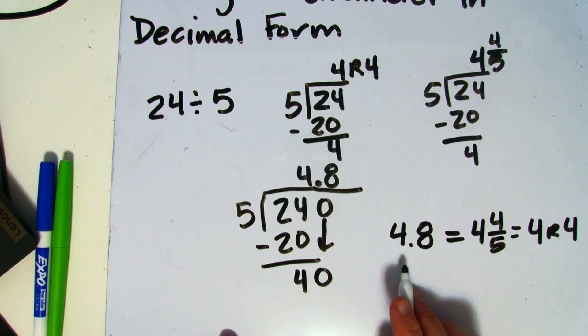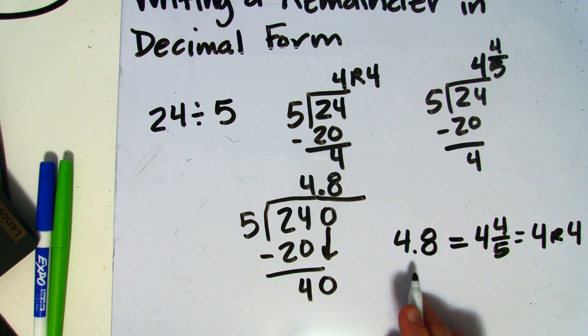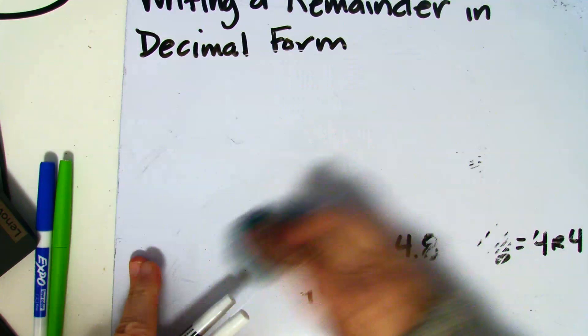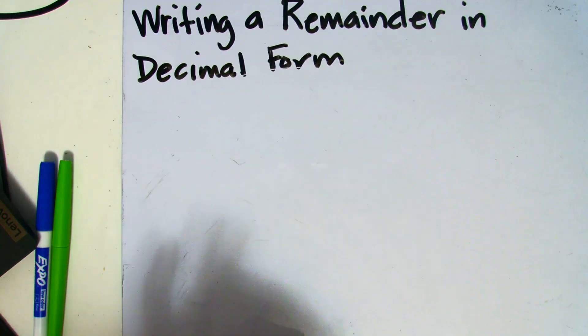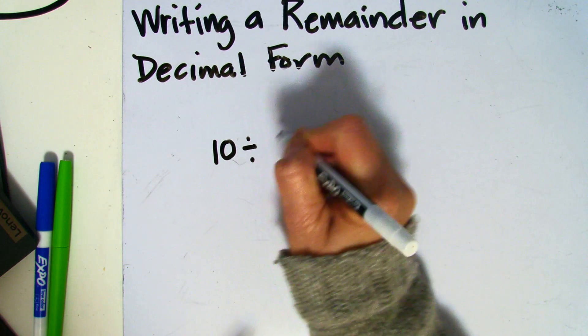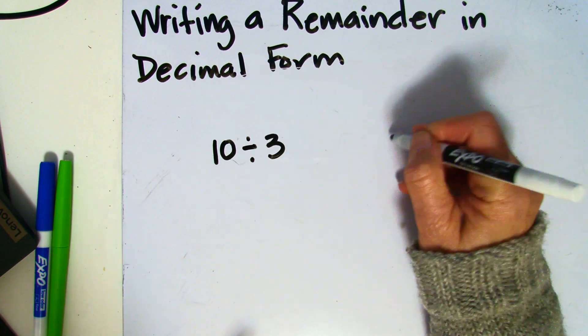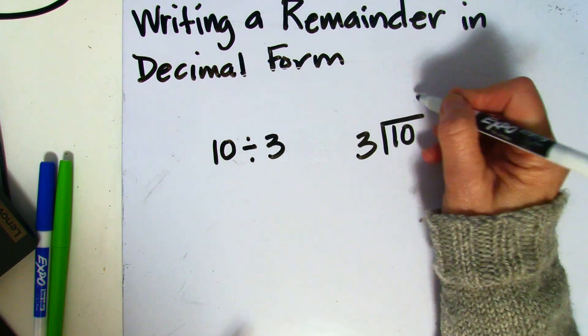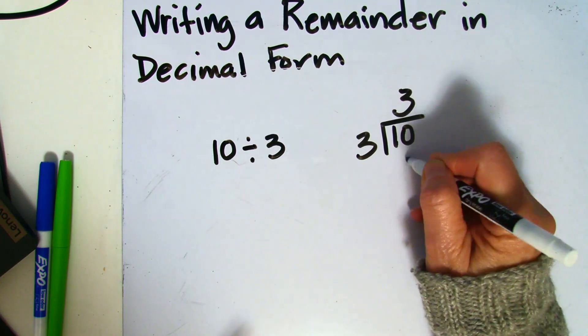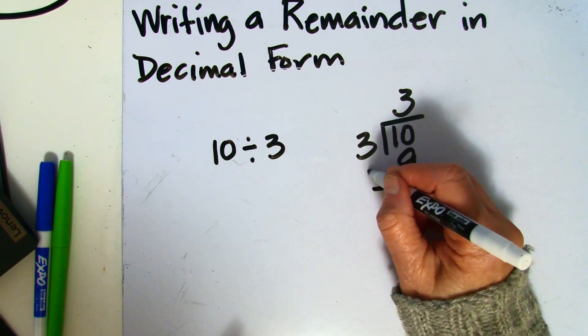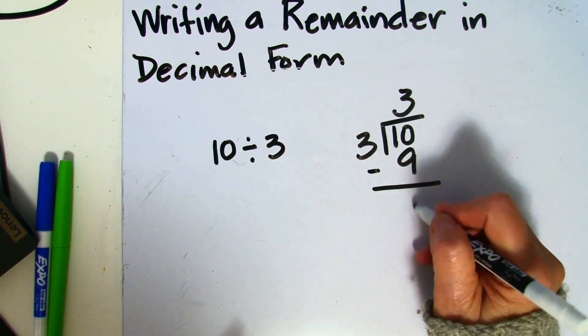Let's look at a couple more in which we're converting our remainder into a decimal. If we have 10 divided by 3, that's going to look like this. 3 goes into 10 3 times. 3 times 3 is 9. If we take away that from 10, we get 1.